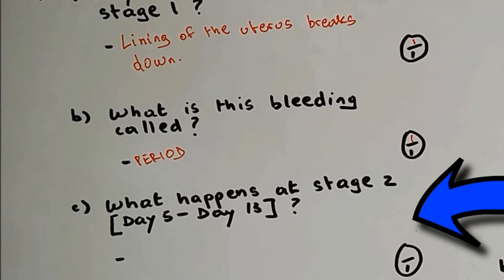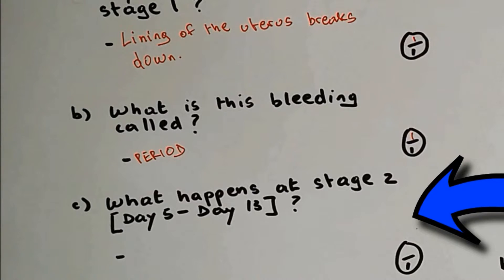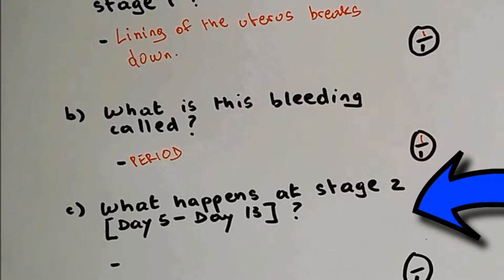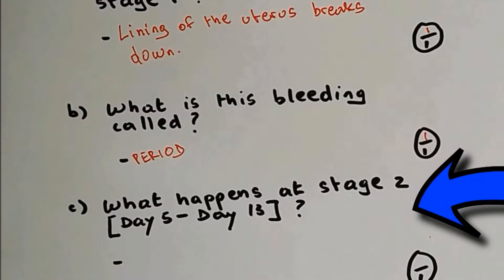Question 1c: what happened at stage two, which is from day five to day thirty? At stage two, the lining of the uterus is reformed.